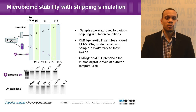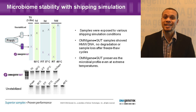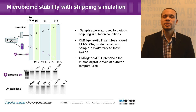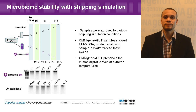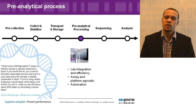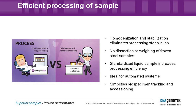To simulate shipping conditions, we had samples exposed to 50 degrees Celsius for one day, 37 degrees for three days, along with multiple freeze-thaw cycles. OmniGene Gut samples showed high molecular weight DNA with no degradation. Once you have the samples back in the lab, the norm when working with frozen samples is to dissect a smaller piece from the bulk sample and weigh it prior to extraction. Whereas with a liquid homogenized sample, this allows you to pipette the sample directly and skip these additional steps.